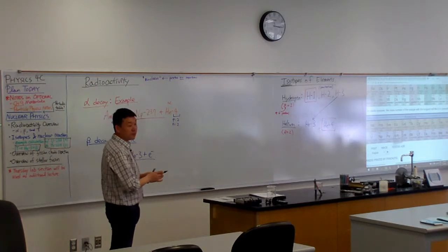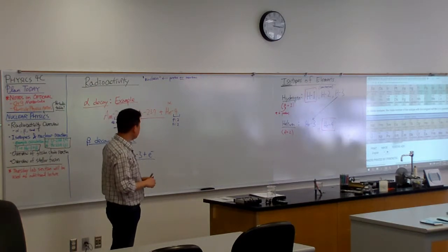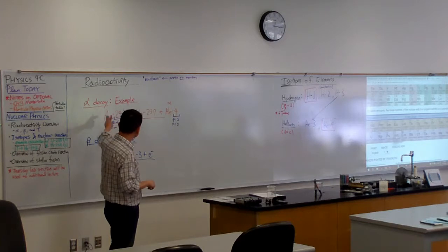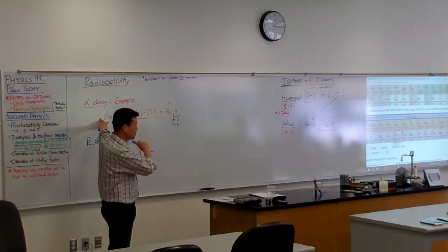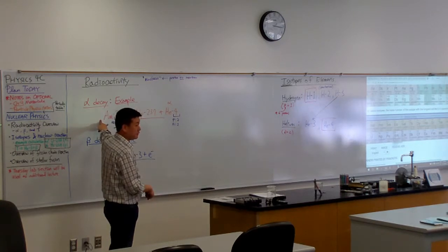So what Americium decays into is Neptunium 237. So this is an example of alpha decay. And in fact, let's use this as a case to do the actual energy calculation later. Let me have more time.